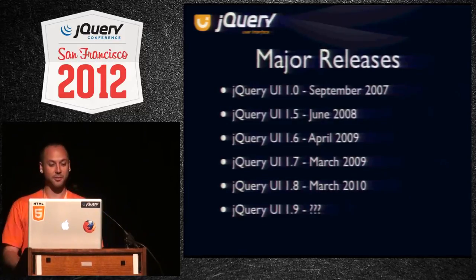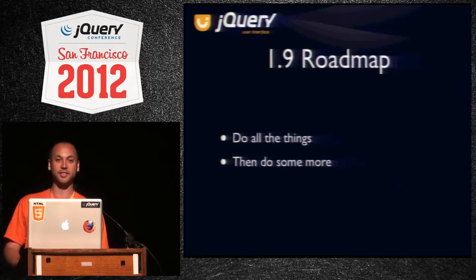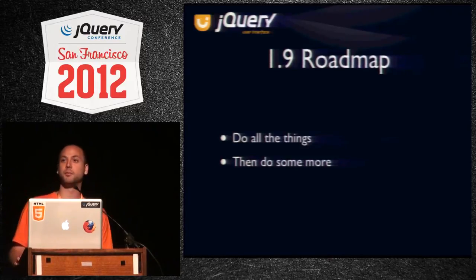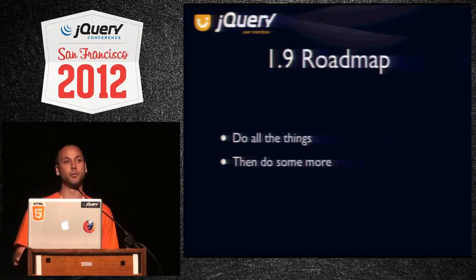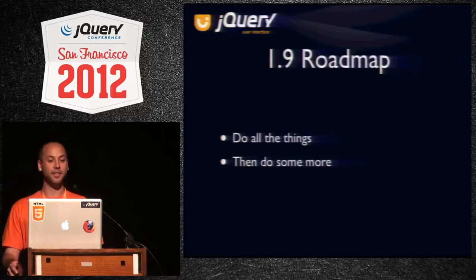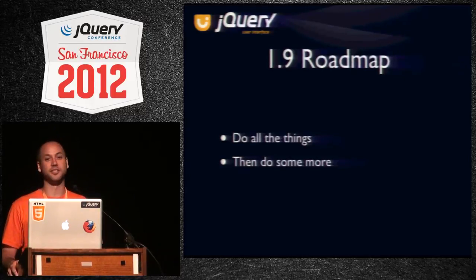What really happened is 1.8 went out really well. We had a new design process and a new development process, and it worked so well that we said, okay, let's go back and fix everything. So when we were working on the roadmap, I decided that we should just fix everything.